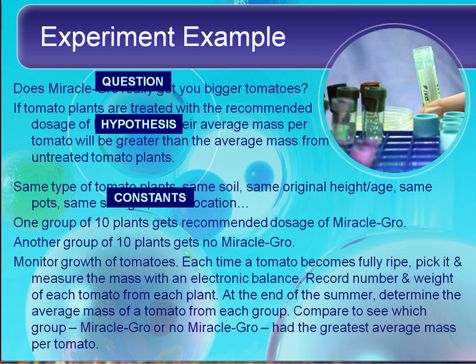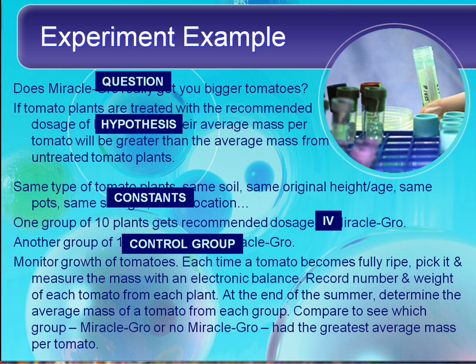In the experiment, we have one group of 10 plants that gets the recommended dosage of Miracle-Gro. Another group of 10 plants gets no Miracle-Gro. The dosage of Miracle-Gro is what we call the independent variable, or IV. This is what we are changing — the variable we intend to include as part of our experiment, and hopefully the only thing that we change. The group with no Miracle-Gro is called the control group — it's the comparison group — to make sure that nothing else is affecting our plants beyond the independent variable.